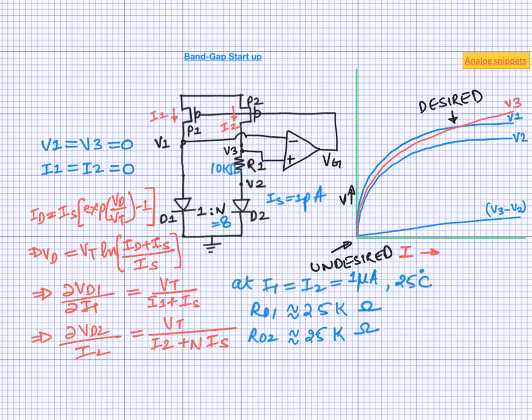To get a better intuitive feel, we can compare this situation to the ball in the hill and the valley. Imagine an uneven surface containing one hill and one valley. Similar to our bandgap circuit, there are two stable points in this surface. Stable point in the surface means points where ball can stay still. The first stable point is at the top of the hill and the other stable point is at the bottom of the valley.